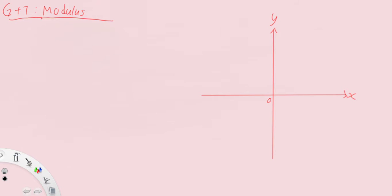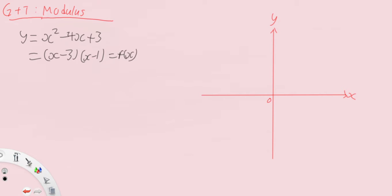Continuing with our modulus topic, we'll be looking at the quadratic equation. Let's say we have the quadratic equation x squared minus 4x plus 3. We then factorize it to get (x minus 3)(x minus 1), and let's sketch this graph. It's going to intersect the x-axis at x equals 1 and x equals 3, and we label this as y equals f(x).